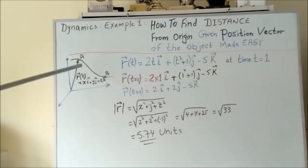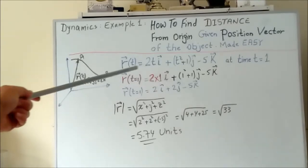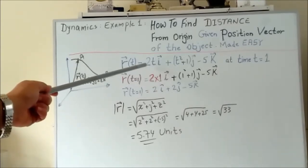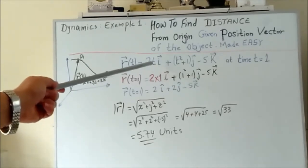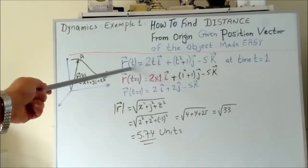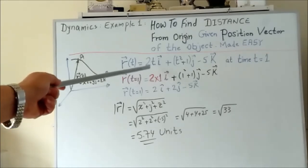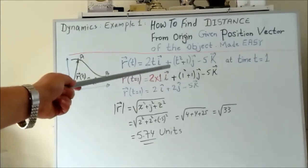Let's take some numbers and simple t for any time which is described at any time t. So r(t) here in this example equals 2ti + (t²+1)j - 5k.